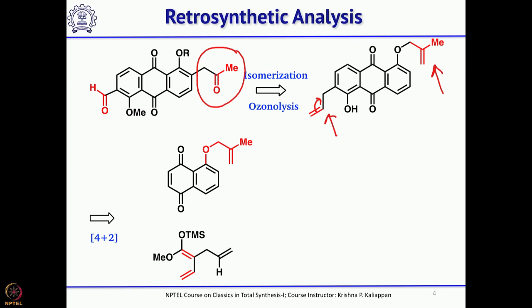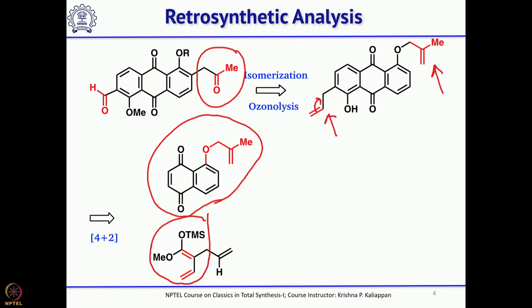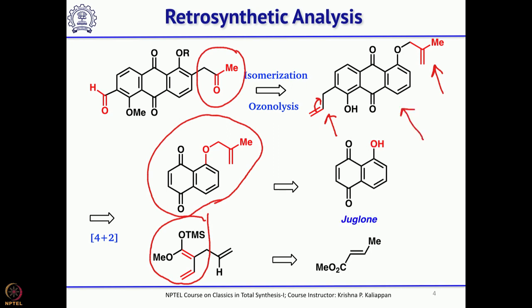This is the diene, and this substituted naphthaquinone is the dienophile. They can undergo an intermolecular Diels-Alder reaction followed by aromatization to give this substituted anthraquinone. And that can be obtained from the commercially available natural product called juglone.